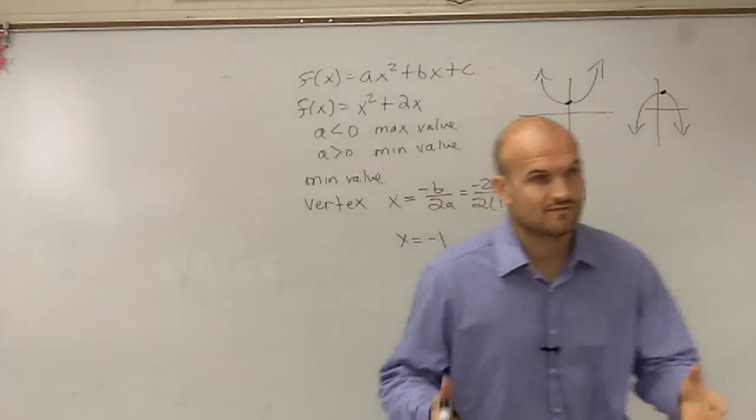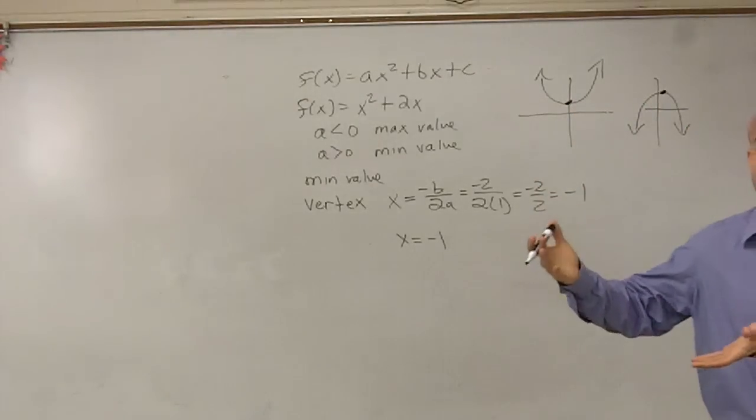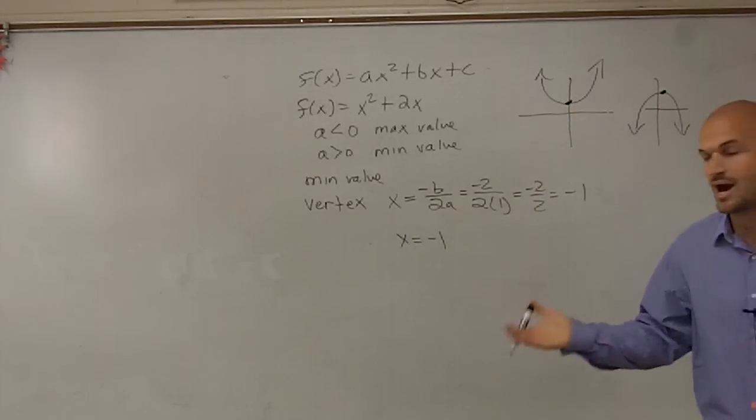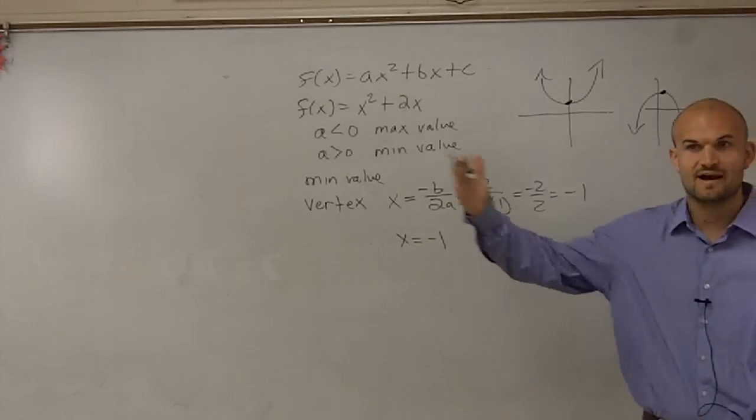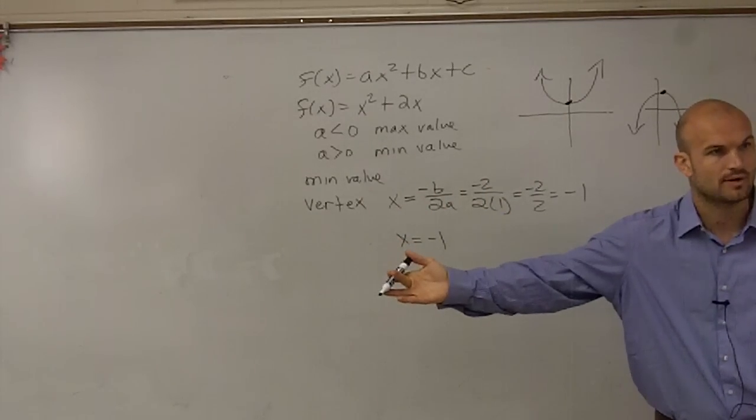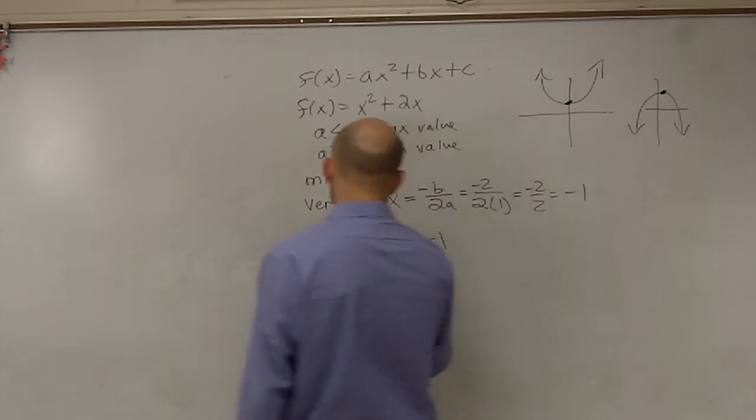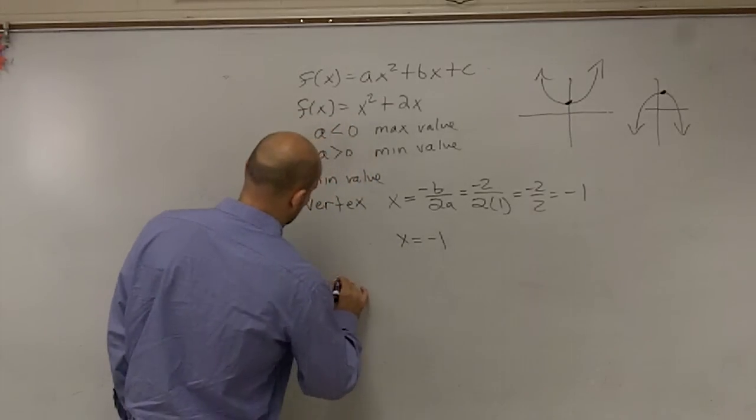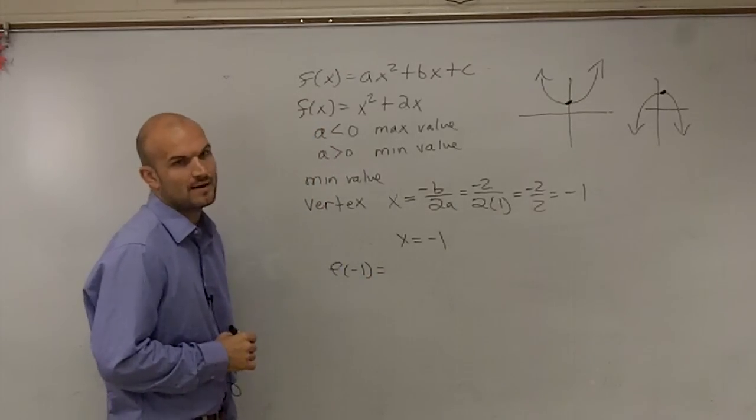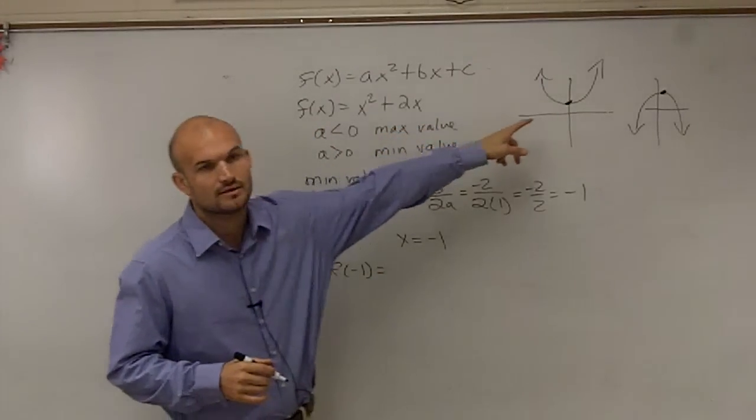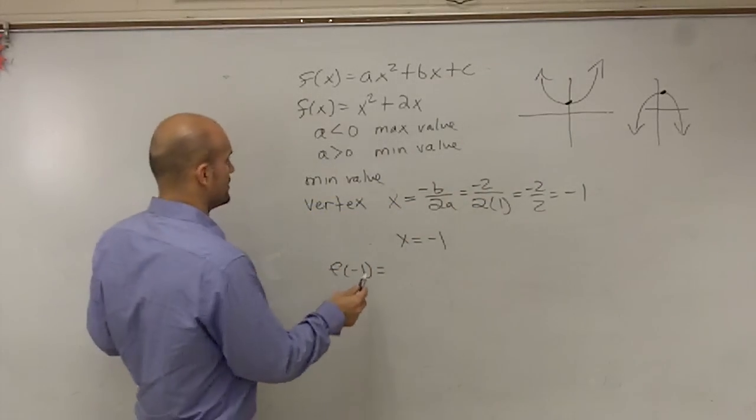Now remember, this is a function. So if I have an x value, and I want to find the f of x value, or the y value, I need to plug this value into my function to find its opposing output. Correct? So what I'm going to do is, so then I take f of negative 1, and I plug in negative 1 to find my f of x value, or my output value of my coordinate.